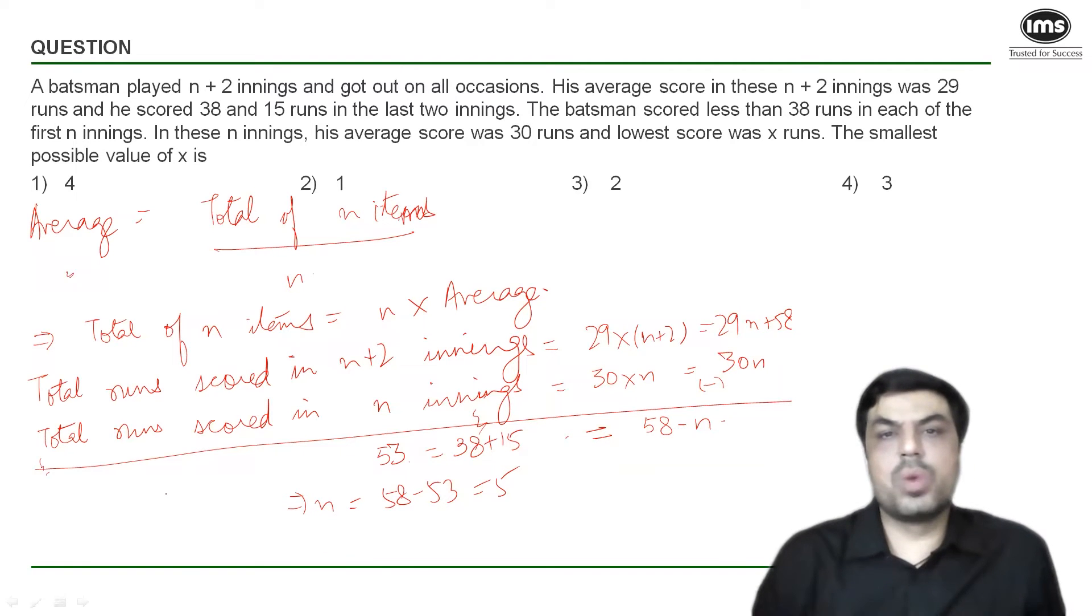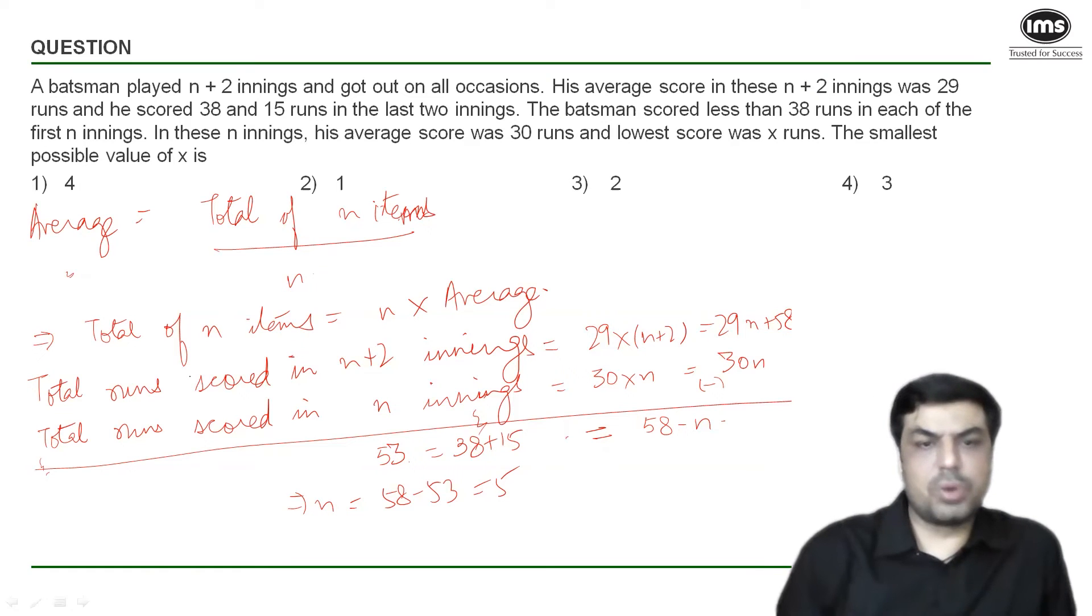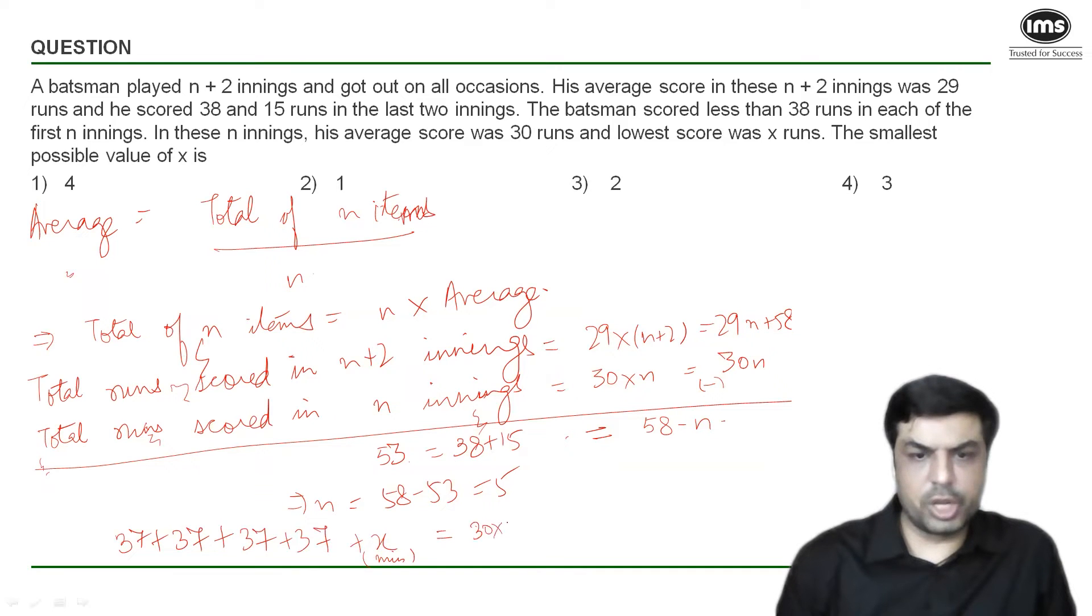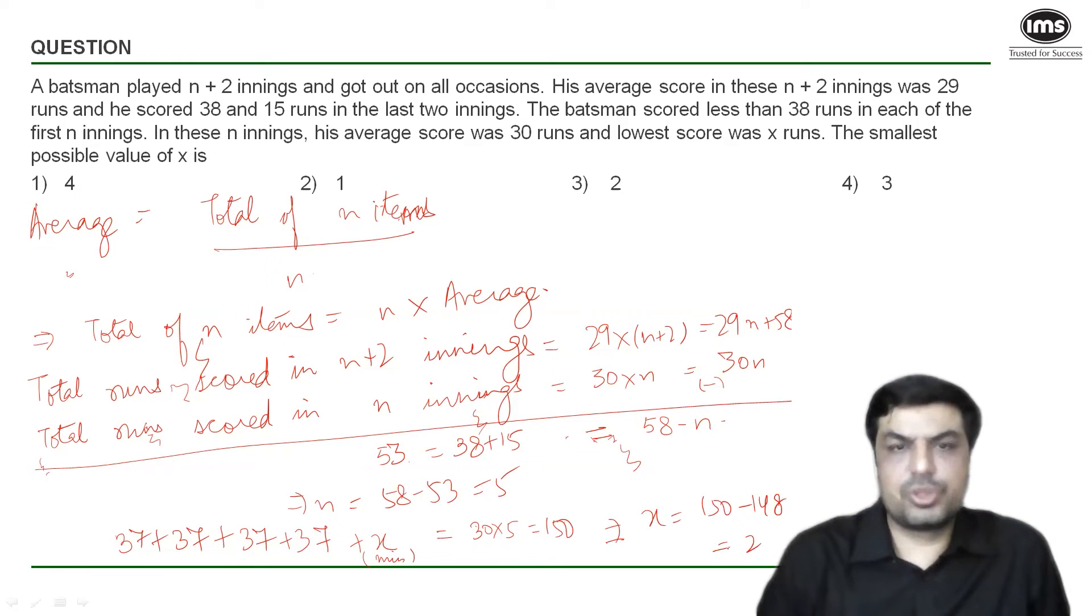Now if I have to minimize his score in one innings can I say that his score in all the other innings should be the maximum possible because the total is a constant. So what is the maximum he could have scored? Less than 38. Which means if I suppose that he scored 37 runs in each of the earlier 4 innings other than the one where he got the lowest score and he got x runs which is the minimum possible in the fifth innings, then his total of first five innings is nothing but 30 into 5 which is 150. Now 37 into 4 is 148 and 150 minus 148 is nothing but 2.